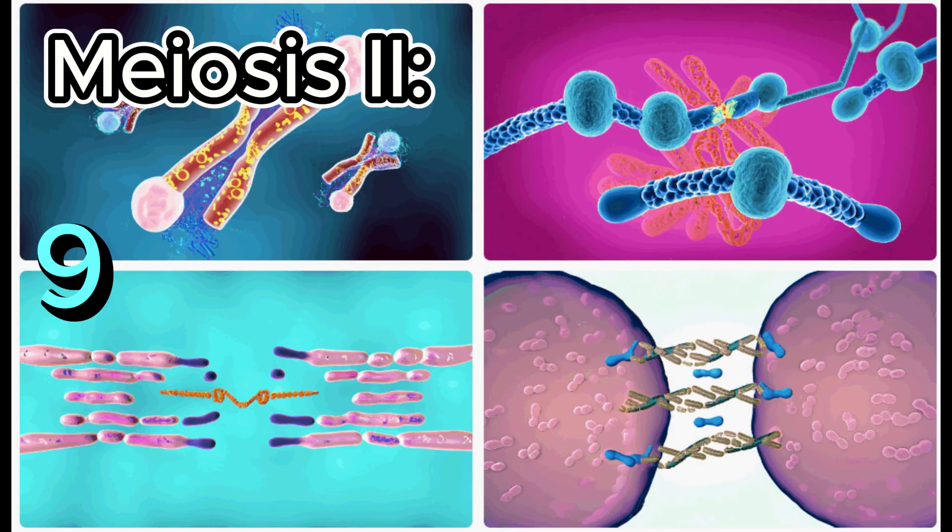Number 9: Telophase II. Chromosomes reach the opposite poles of the cell again. Decondensation occurs, and a nuclear membrane forms around the nuclei.